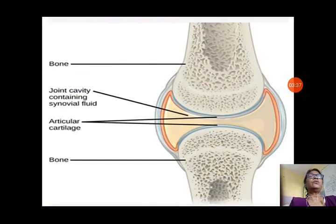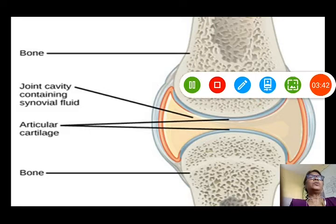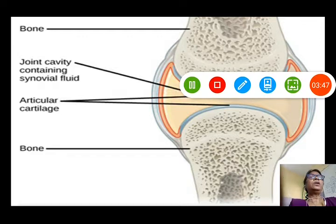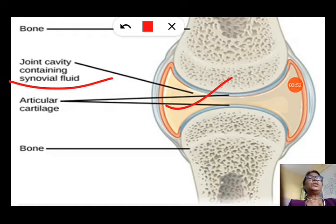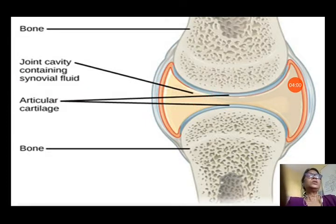Let us see about the synovial joint. You can see the joint cavity here — there is a hollow space where the synovial fluid is filled. In the space between the two bones where the joints are, it is filled with synovial fluid that lubricates the joint so that the bones can move smoothly.